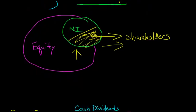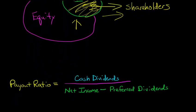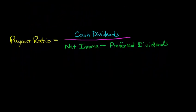So now let's get down to the formula. The payout ratio is basically the cash dividends to common shareholders, so just regular shareholders, not the preferred shareholders. And then we're going to divide that by net income, that's the amount of the profit, and then we're going to subtract out preferred dividends.